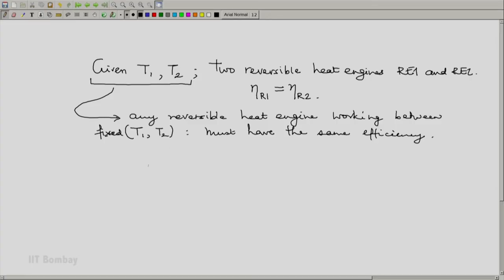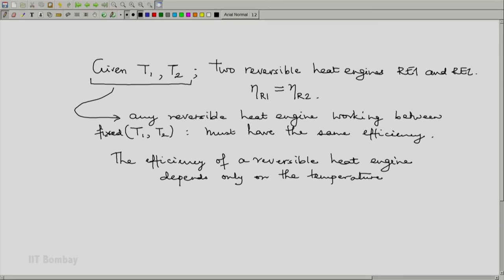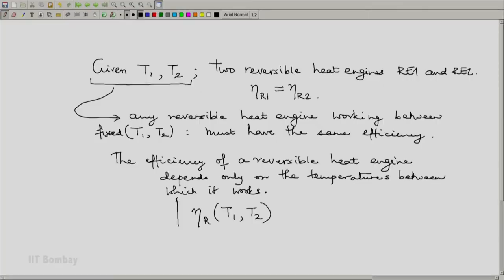Turning this around, we can say that the efficiency of a reversible heat engine depends only on the temperatures between which it works. In mathematical symbolism, if eta R is the efficiency of a reversible heat engine, it is a function only of T1 and T2 and of nothing else. If T1 and T2 are fixed, eta R is fixed; if one of them changes, eta R may be different. This very important result will now be used in some very curious and important ways. Thank you.